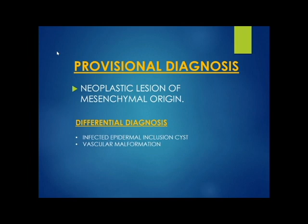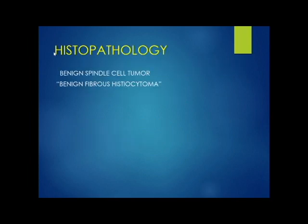From the above findings, my provisional diagnosis is a neoplastic lesion of mesenchymal origin. The differential diagnosis could be infected epidermal inclusion cyst and vascular malformation. The histopathology report came as benign spindle cell tumor — benign fibrous histiocytoma.